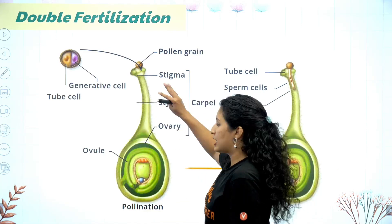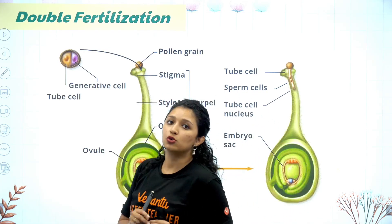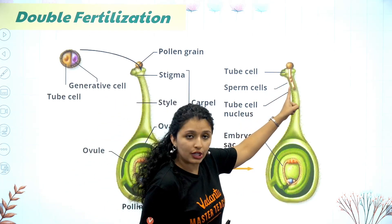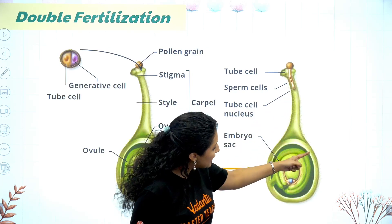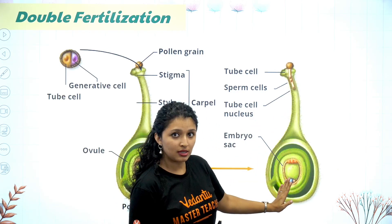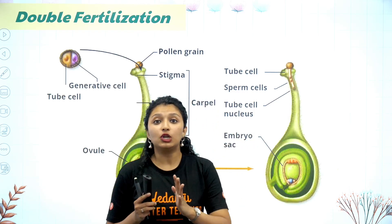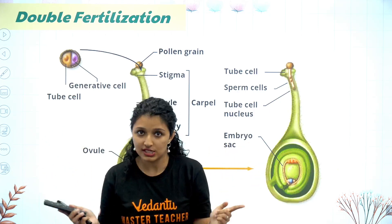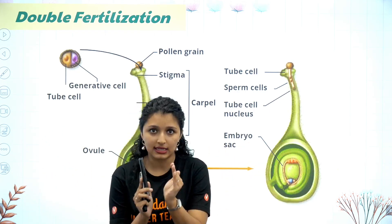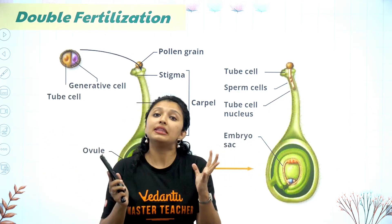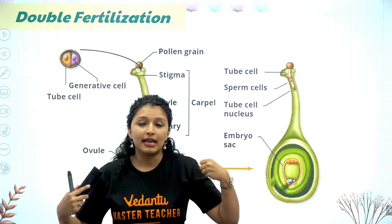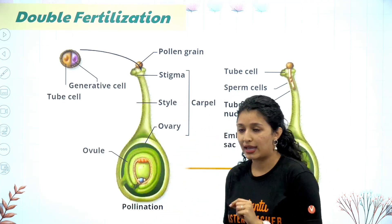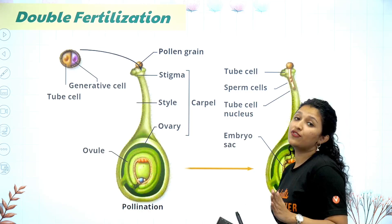In pollen-pistil interaction, we have two male gametes and tube nuclei inside the pollen tube, which guide it down to the micropylar end. The pollen tube reaches the egg apparatus, which has three cells — the egg cell in the middle and two synergid cells on either side.